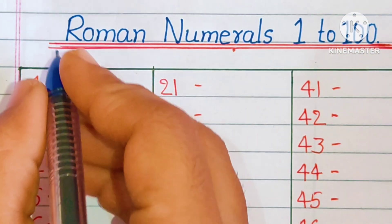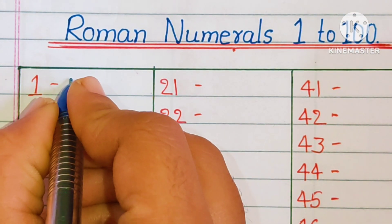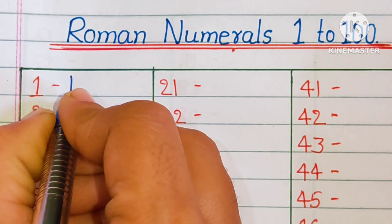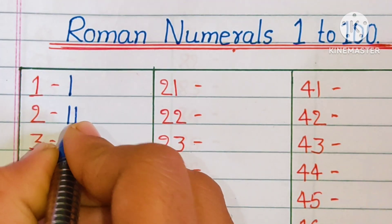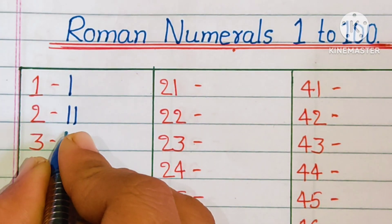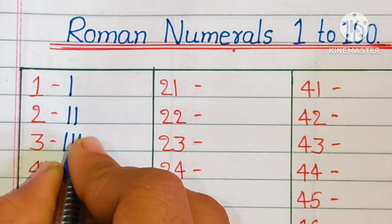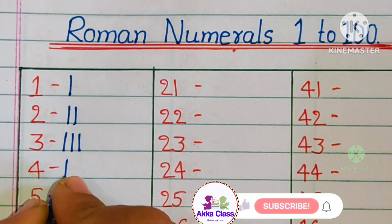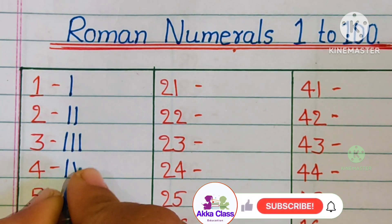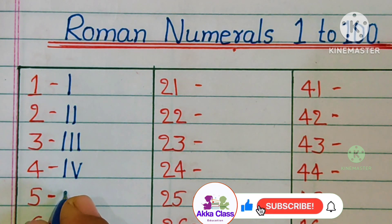Hello everyone, today we are learning Roman numerals. 1: I. 2: II. 3: III. 4: IV. 5: V.